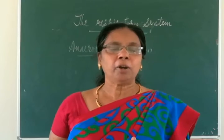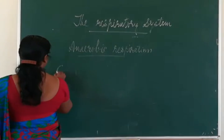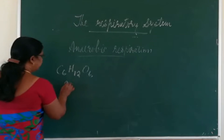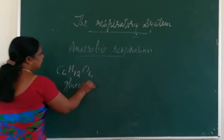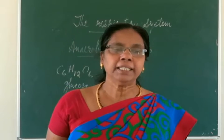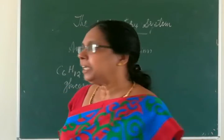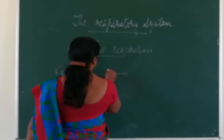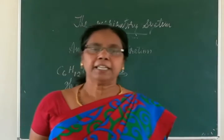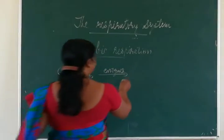The overall chemical equation of anaerobic respiration can be represented like this. C6H12O6, which is nothing but glucose. In aerobic respiration we had plus 6O2, but here there is no oxygen. So in the presence of enzymes, this anaerobic respiration takes place. The main product is nothing but lactic acid, and heat energy is also liberated.